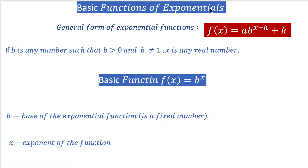Basic functions of exponentials. The general form of exponential functions is f(x) = ab^(x-h) + k. Here, 'a' represents stretch or compression of the exponential function, 'b' is the base of the function, and x-h is the exponent representing the horizontal translation of exponential functions, while 'k' represents the vertical translation.